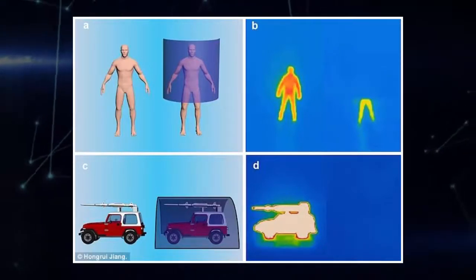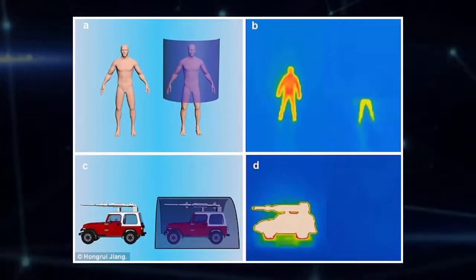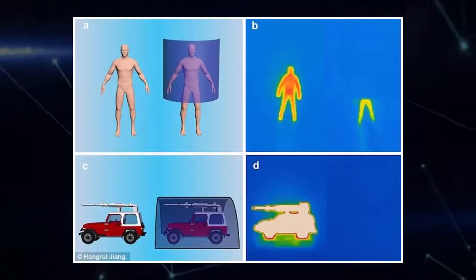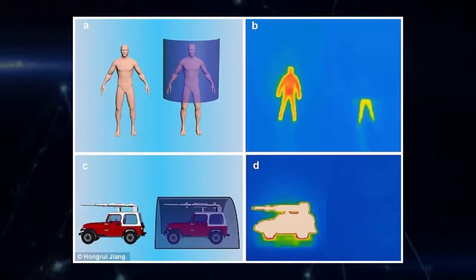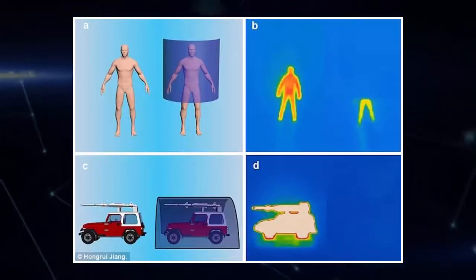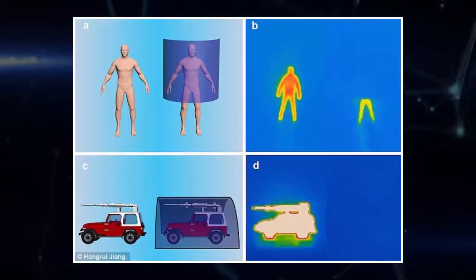Researchers also equip the material with electronic heating elements that can trick infrared cameras. You can intentionally deceive an infrared detector by presenting a false heat signature, Jiang said. It could conceal a tank by presenting what looks like a simple highway guardrail.